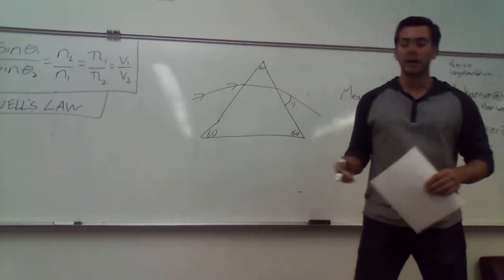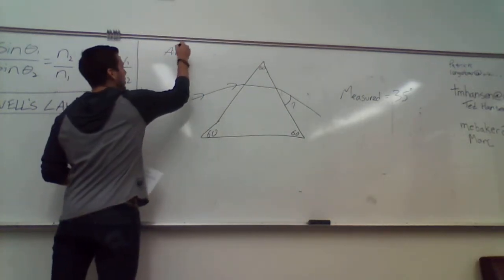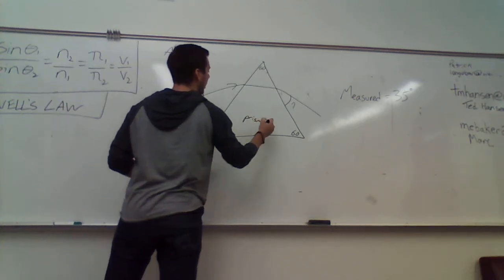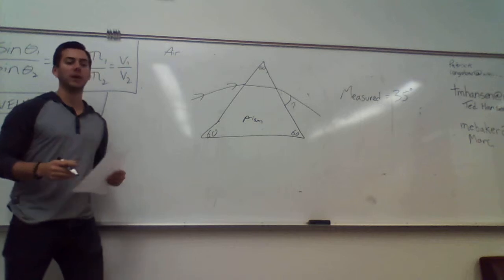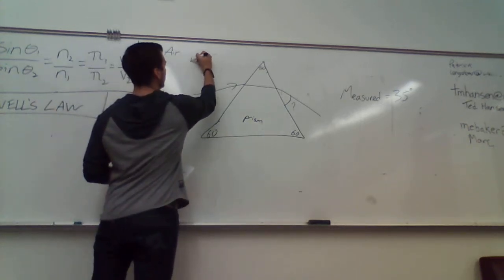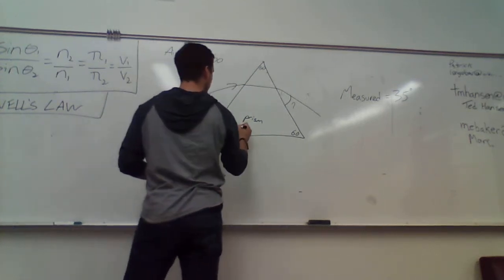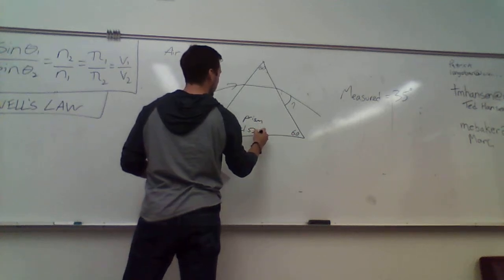So if we shine a light in, we're shining from air into a prism of some sort. I've denoted the refractive indices on both. What does it say on the worksheet for the refractive index of the outside of the prism? 1.1. And for the inside? 1.52.